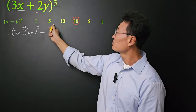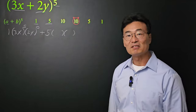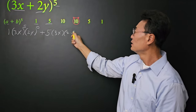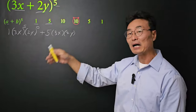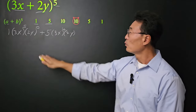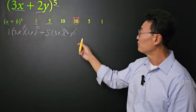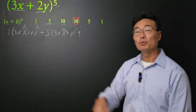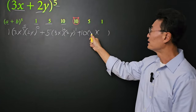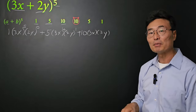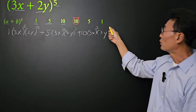Next, plus, the next coefficient is 5. I write down the 5, and then the two sets of parentheses with 3x and 2y. The exponent for 3x goes down by 1, giving us 4, while the 0 goes up by 1, giving 1 — and 4 plus 1 still adds up to 5. Continuing: plus, next coefficient is 10. Again, write down the two sets of parentheses with 3x and 2y. The 4 goes down by 1, giving us 3; 2y goes up by 1, giving us 2.